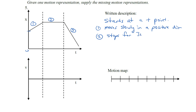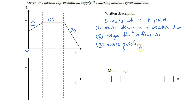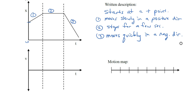Segment three: it starts moving again. Since this line is downhill it's moving in a negative direction, and it's much steeper than segment one, so it moves quickly in a negative direction. For the motion map: I start at some positive location, the object moves away slowly for a while, then stays still, then moves quickly backwards.